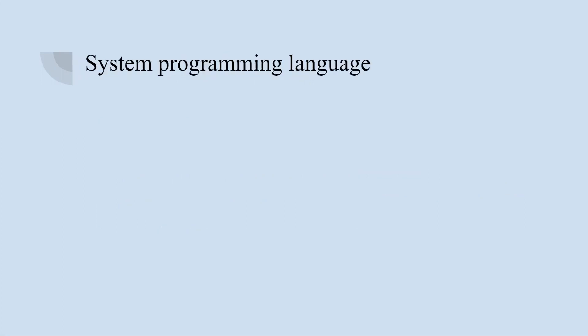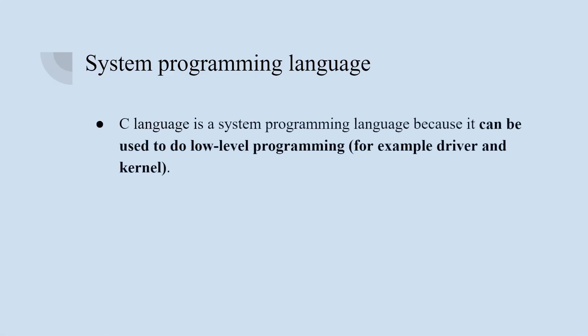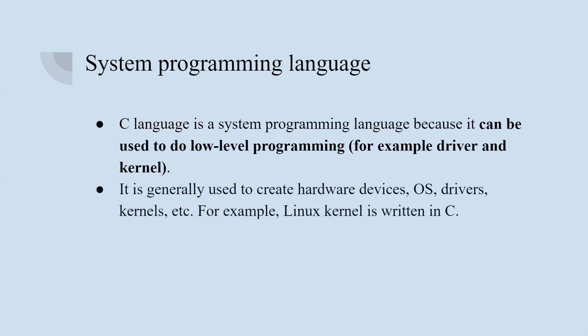Now let's see why C language is known as system programming language. It can be used for low-level programming. Most languages cannot run with low-level programming, but C has the advantage of being able to run with low-level programming.